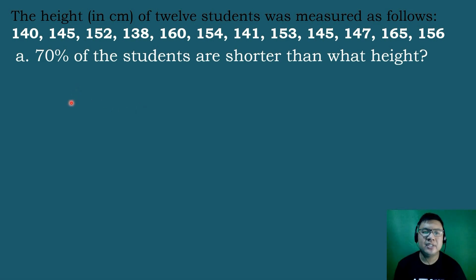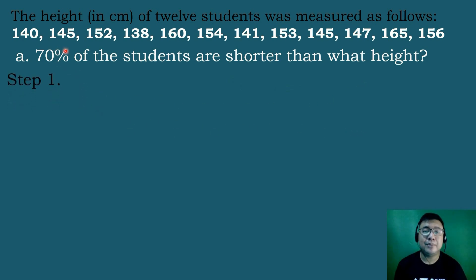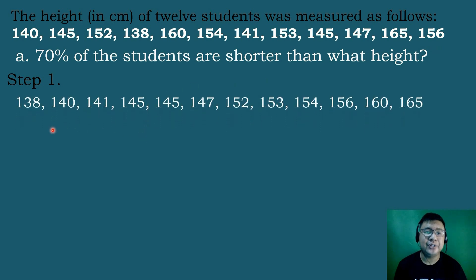Let's answer the first question: 70% of students are shorter than what height? The first step is to arrange the heights of the students in ascending order. So we have: 138, 140, 141, 145, 145, 147, 152, 153, 154, 156, 160, and 165.